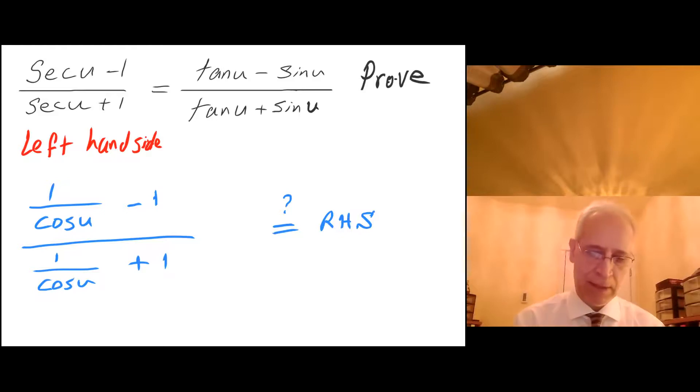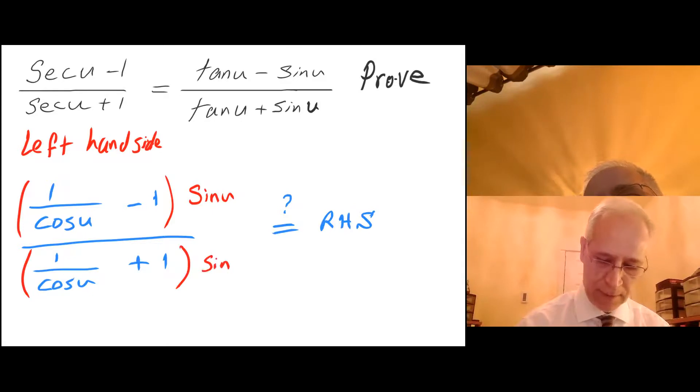Well let's see. Since I have a tangent on the right hand side, I'm going to attempt to multiply the top and bottom of the left hand side by sine of u. So I'm going to multiply the top by sine of u and the denominator by sine of u. Going to the next page.